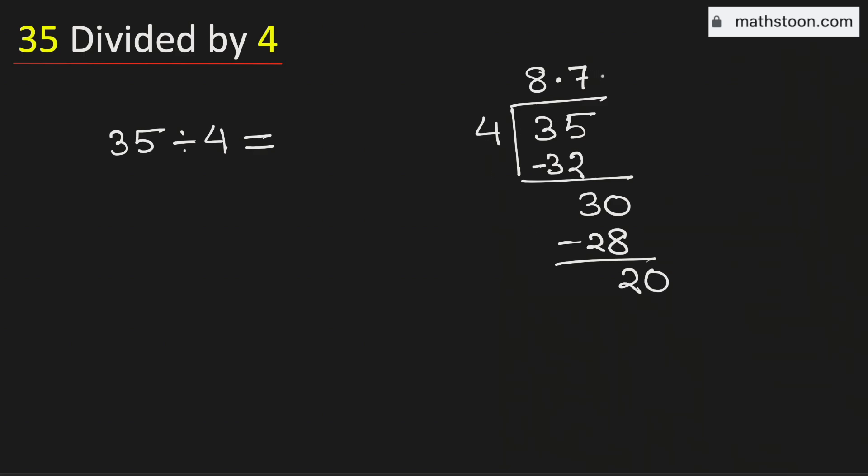Now 4 times 5 is 20. Subtract we get 0. As we have obtained the number 0, so we will stop. Therefore, 35 divided by 4 is equal to 8.75. And this is our final answer.